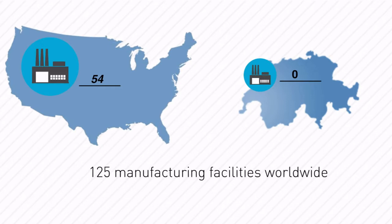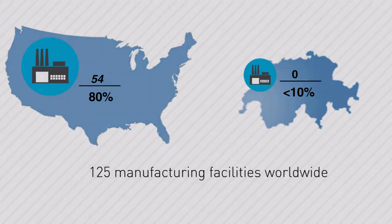In 2012, Caterpillar spent $2 billion on research and development — 80% in the United States and less than 10% in Switzerland. You can find out how well this, and Caterpillar's lack of corporate transparency, worked out for the company.